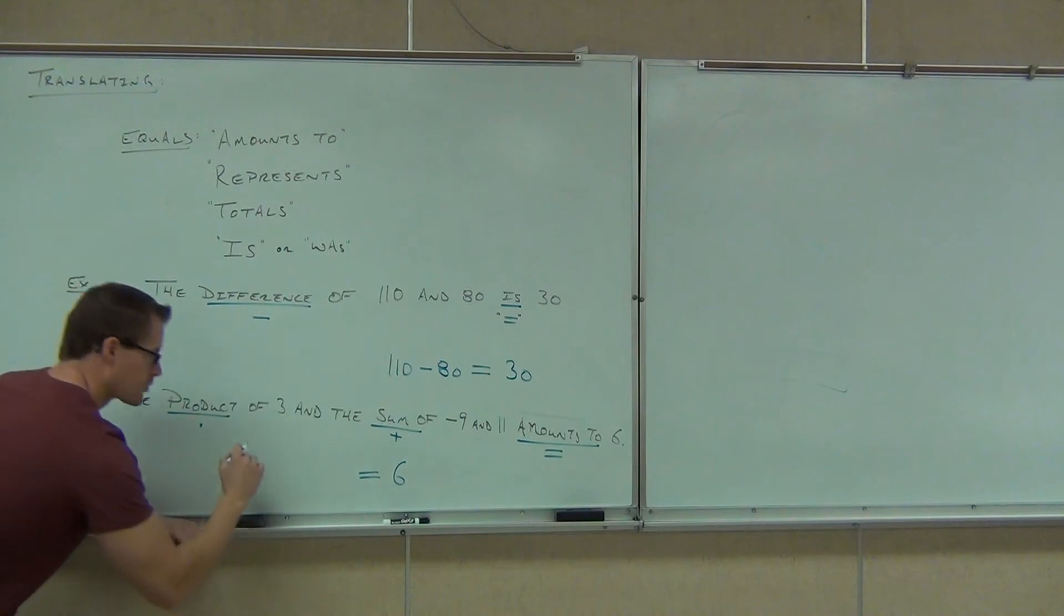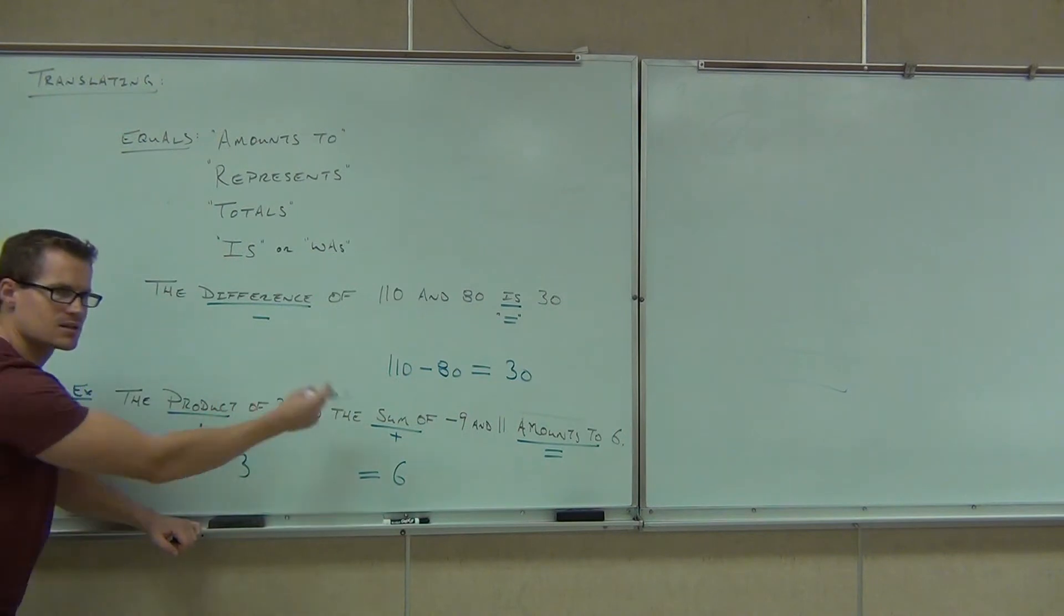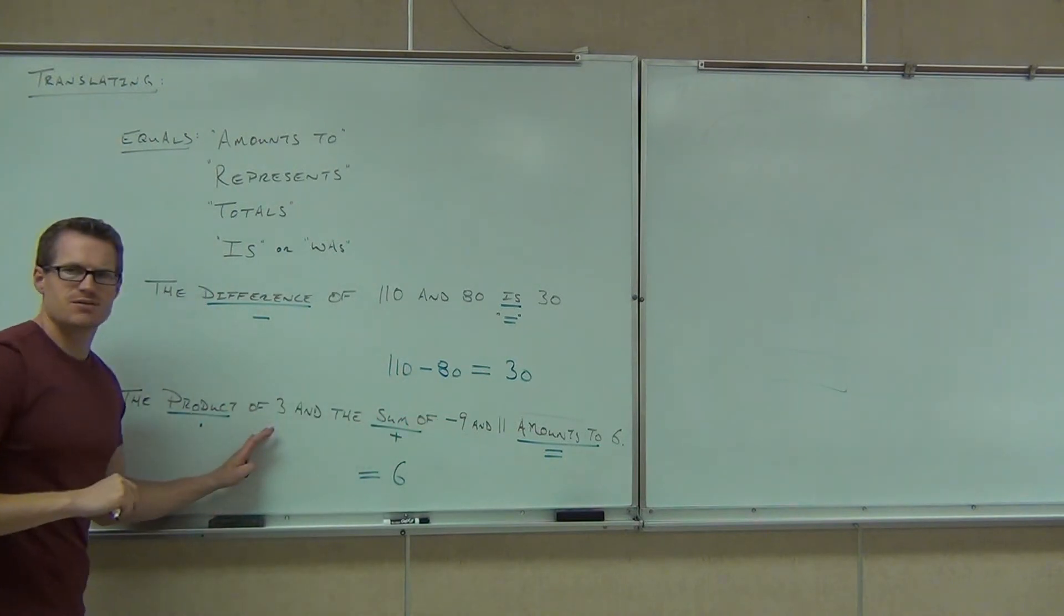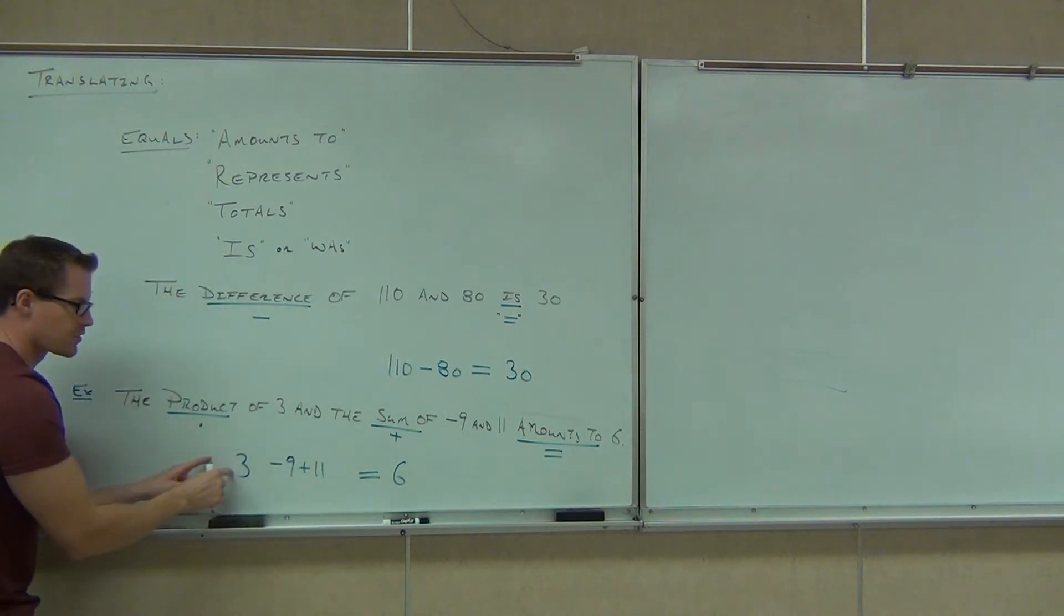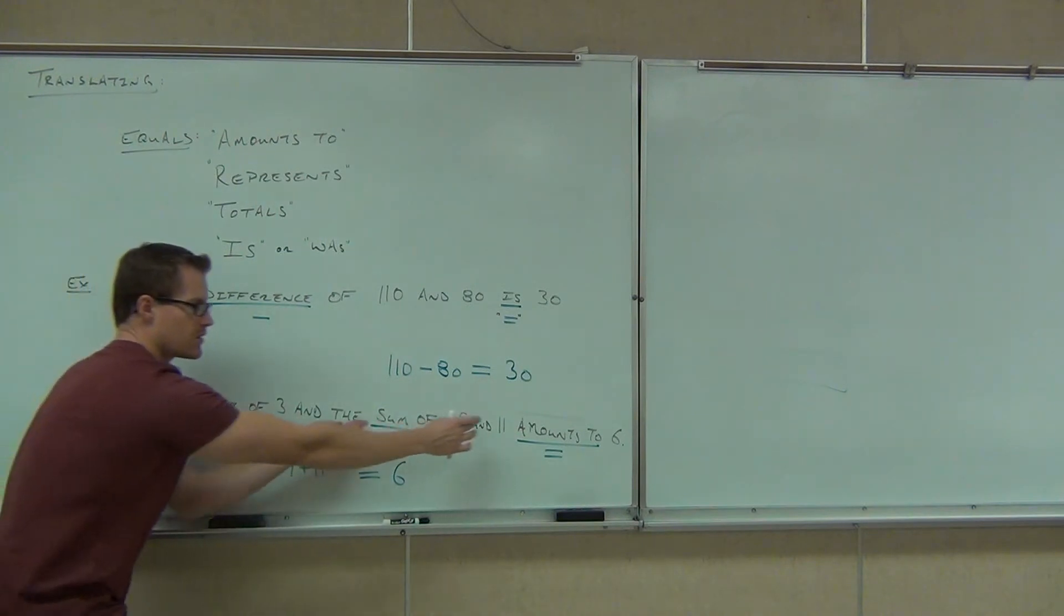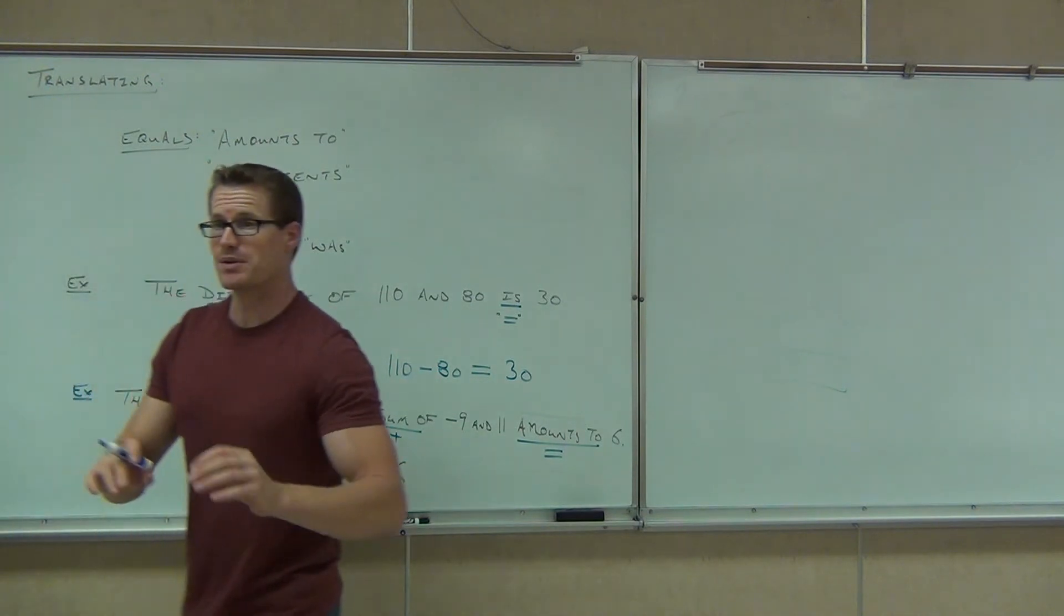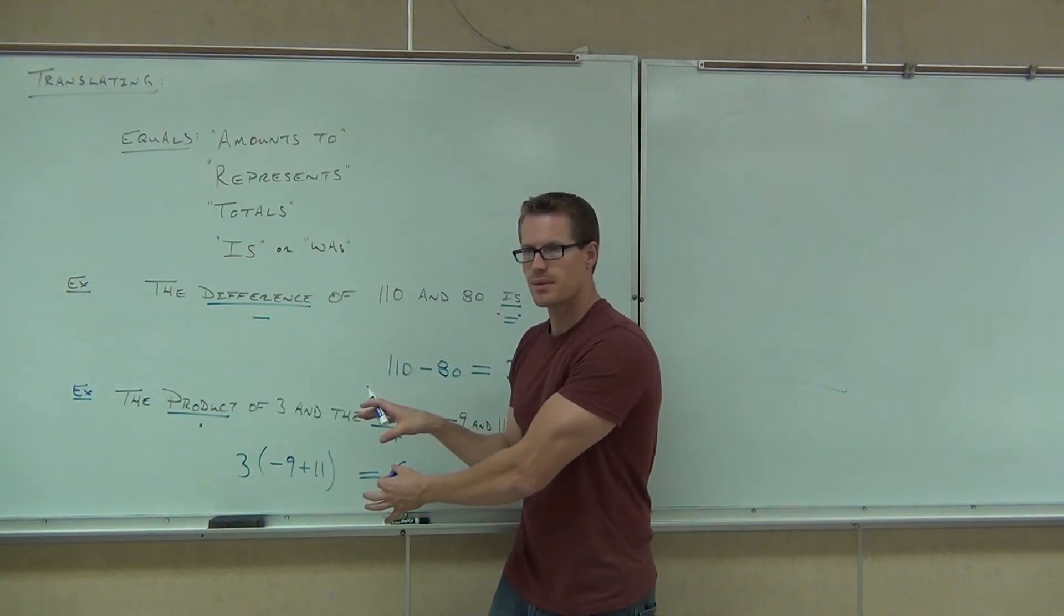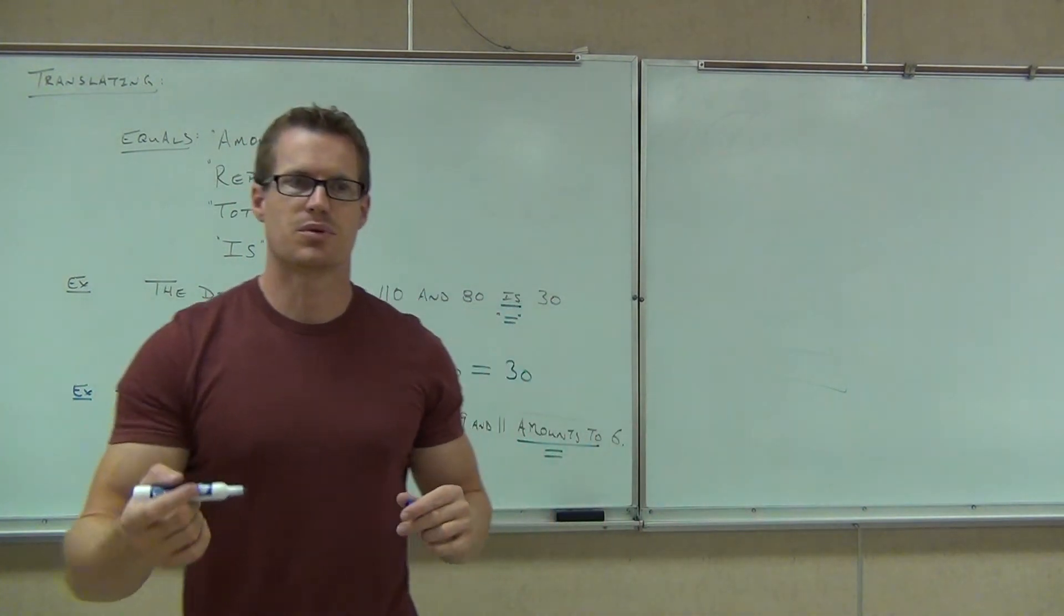So this says the product of 3, that's 3 times, but then it's not like 3 and 6 or 3 and a number or 3 and something else. It's 3 and the sum of, so this is 3 times, what's the sum of negative 9 and 11? Let's write that. Negative 9 plus 11. So we want 3 times this sum. Not just negative 9, we want 3 times the whole thing. 3 times the sum of this. The way you show that is with those parentheses. Most times when that happens, when it says like the product of 3 and, and that gives you another operation to do, like sum, difference, it's typically that parentheses. That's what that's implying.